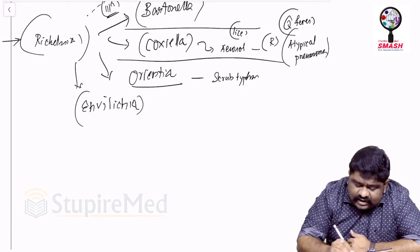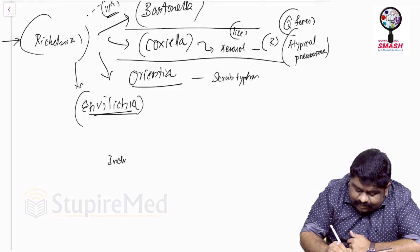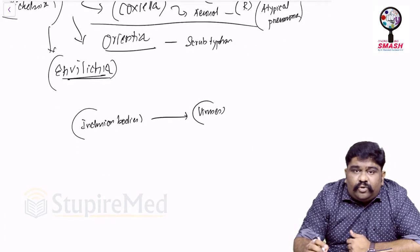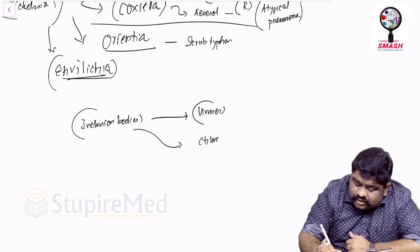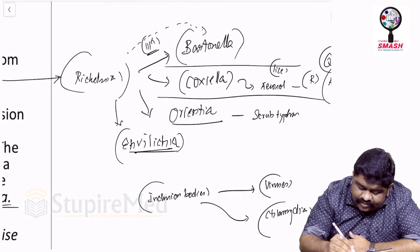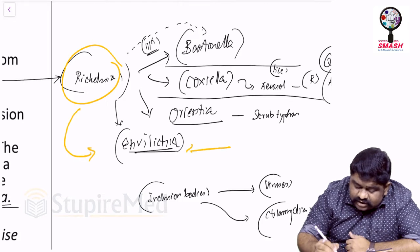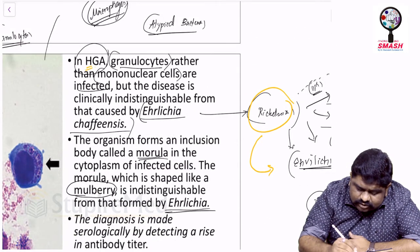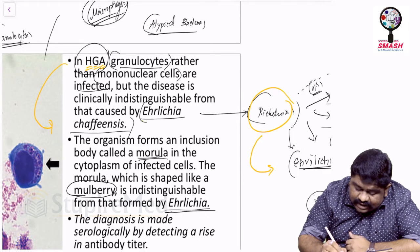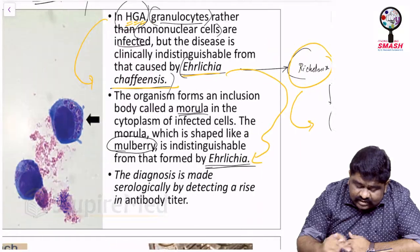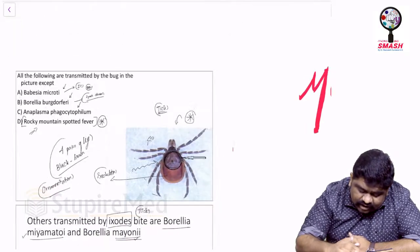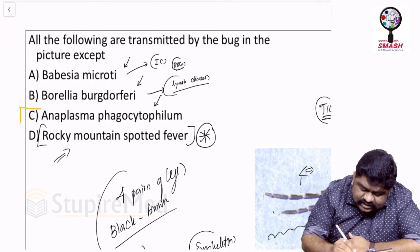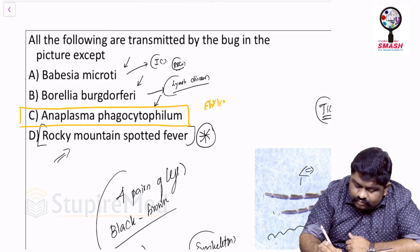Inclusion bodies are mostly found in viruses. In bacteriology, inclusion bodies are uniquely seen in Chlamydia. Among Rickettsiae, the variant known for inclusion bodies is Ehrlichia, where those inclusion bodies are called morula. Human granulocytic anaplasmosis runs parallel to Ehrlichia chaffeensis disease, and Anaplasma phagocytophilum likewise forms morula.